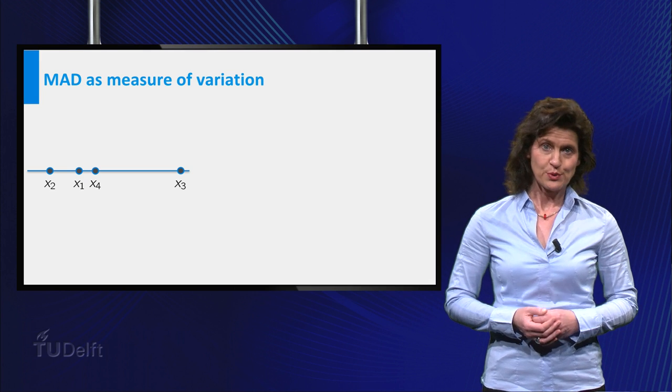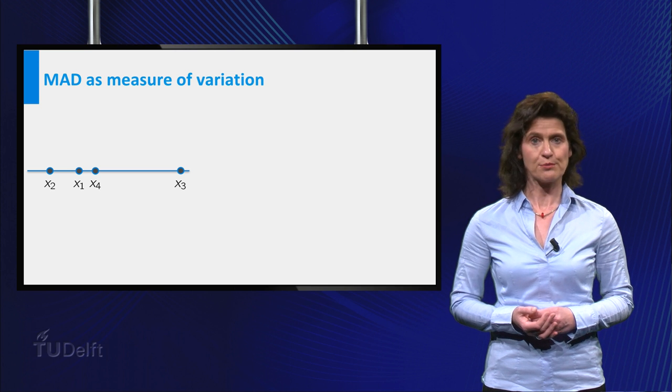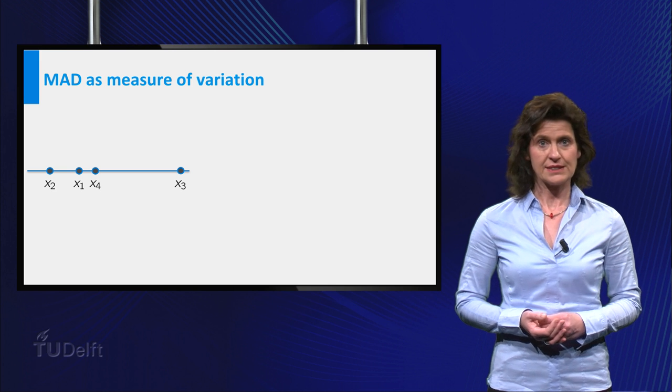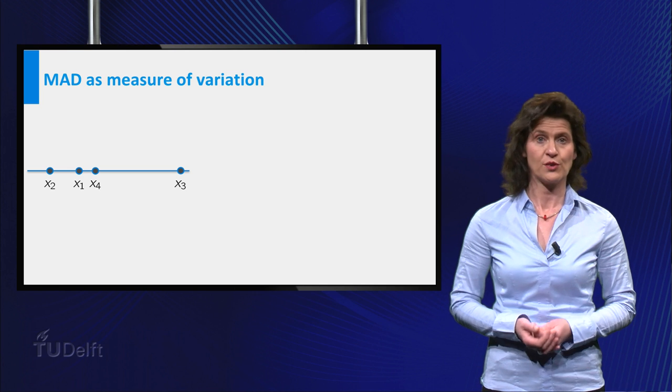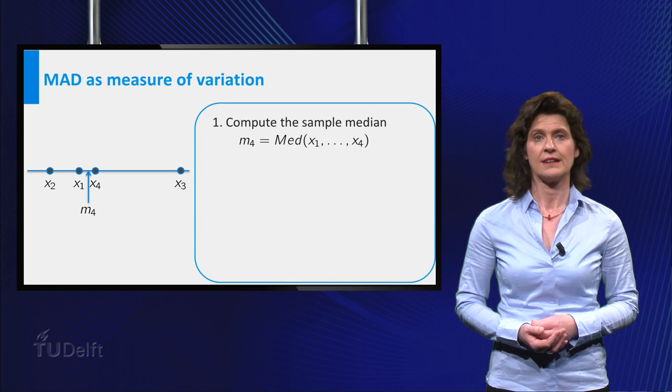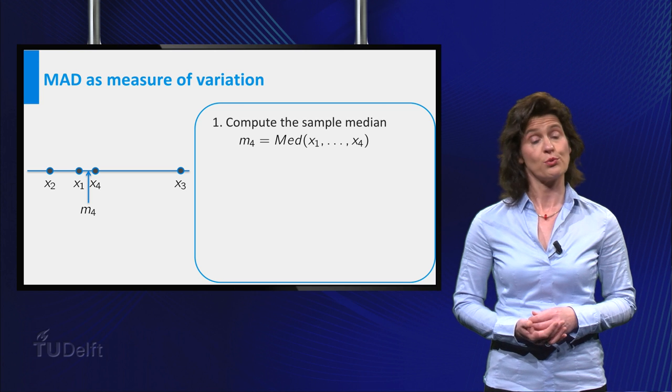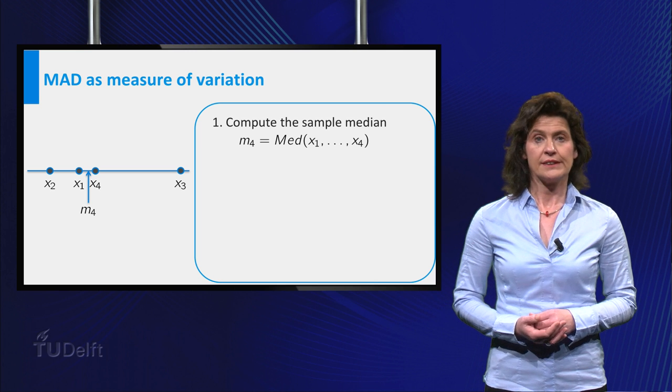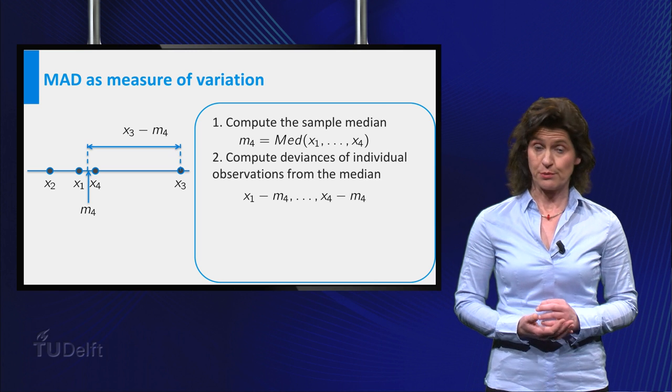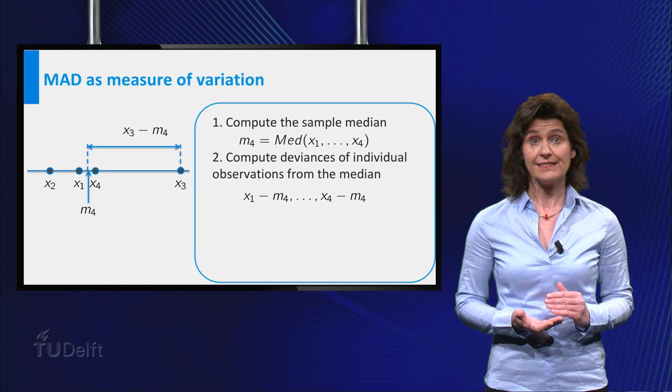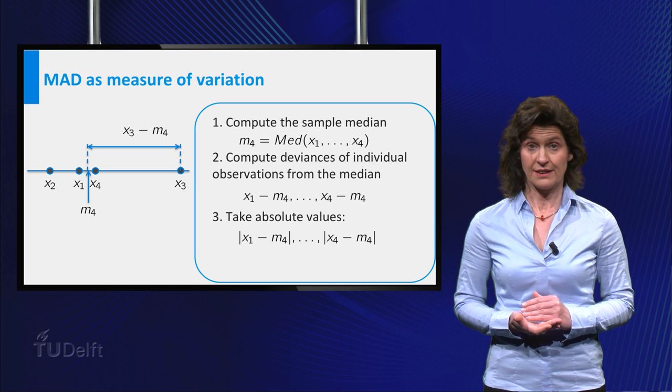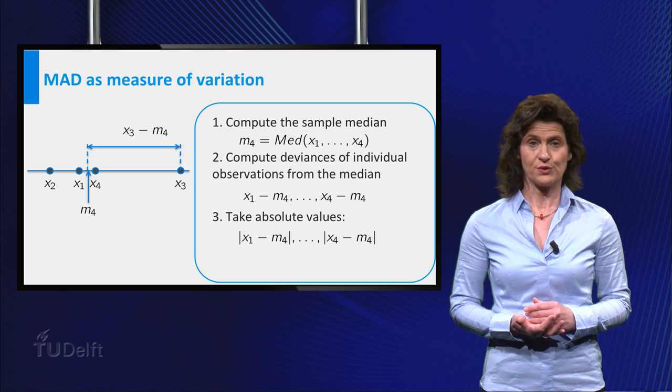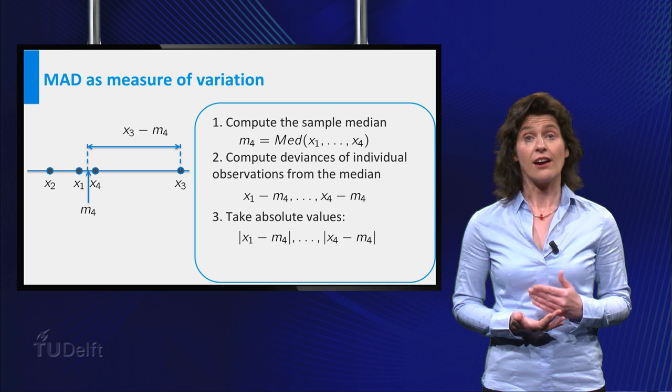Another method to quantify the spread in a dataset is by means of the median absolute deviation, commonly abbreviated to MAD. This MAD can be computed in four steps. First, compute the median of the data. As we have an example with four points here, the median is the average of the second and third observation, ordered in magnitude. Then compute for every individual data point the difference with this median and the absolute values of these differences. These are four non-negative numbers. Large values of these numbers indicate that here the data are highly variable.